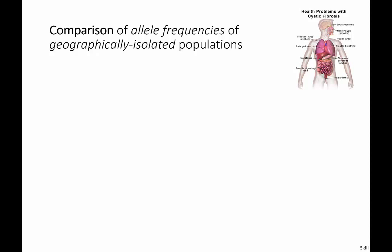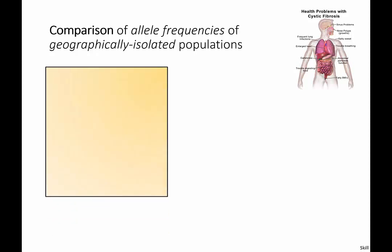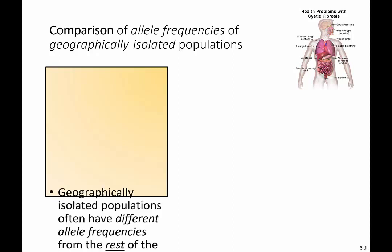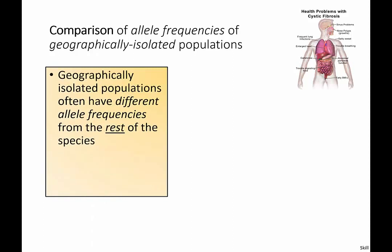If you have a smaller group that's been separated from the main group, this smaller group doesn't have such a wide variety of genes to choose from, and so the allele frequencies start shifting — or a better word is drifting — away from the normal.